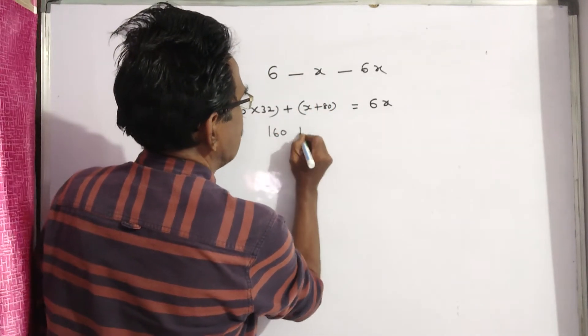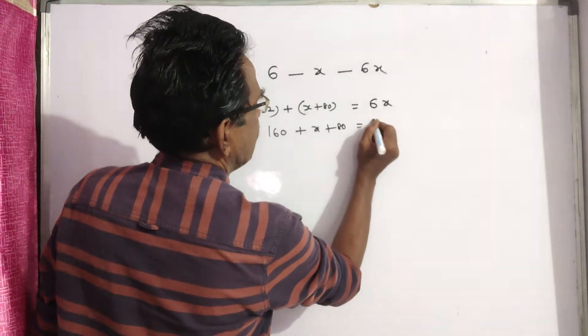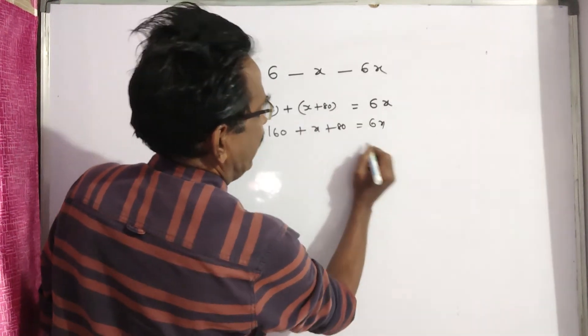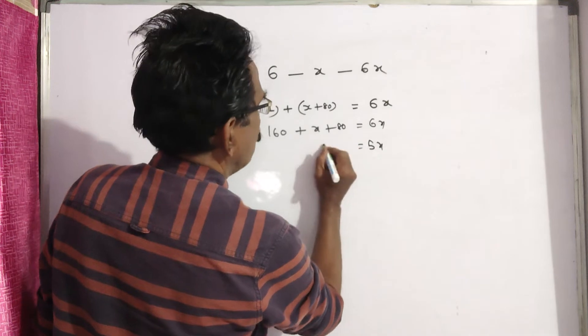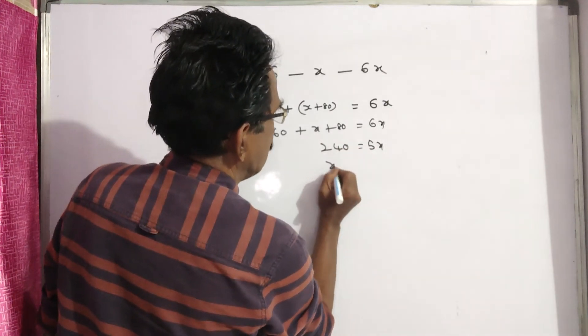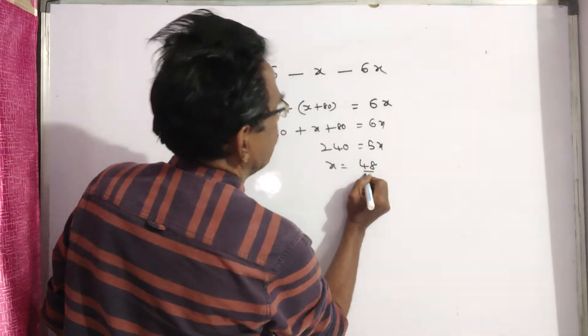5 times 32 is 160, plus x plus 80 equals 6x. 5x equals 240. x equals 48.